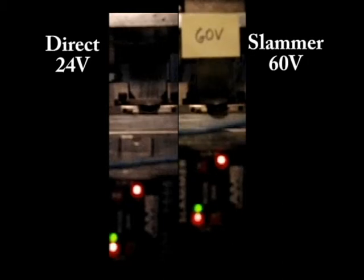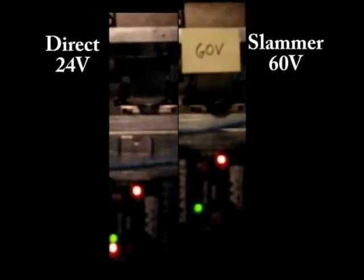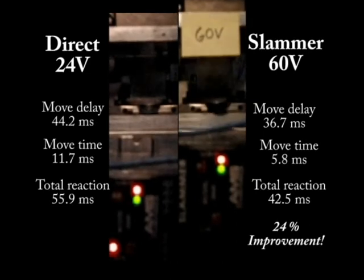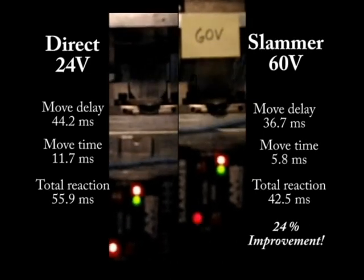The slammer module got the blade to start moving 7.5 milliseconds faster. The overall reaction time was 13 milliseconds faster, which is a reduction of 24%.